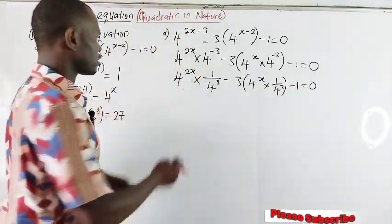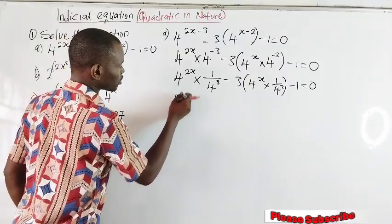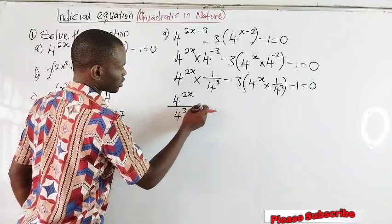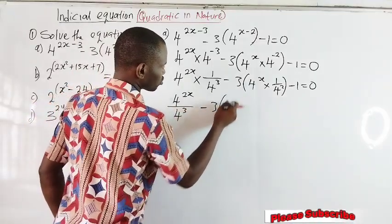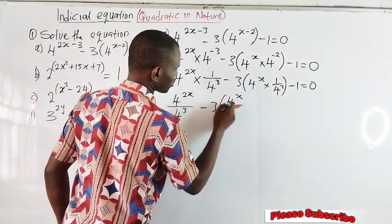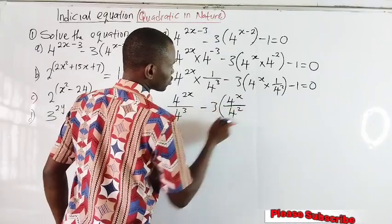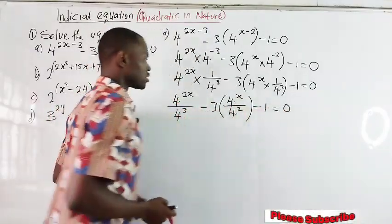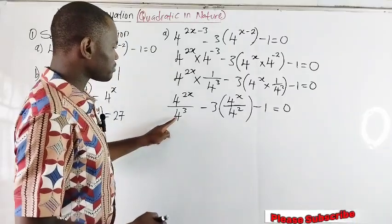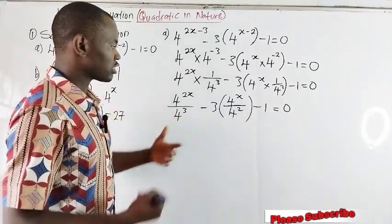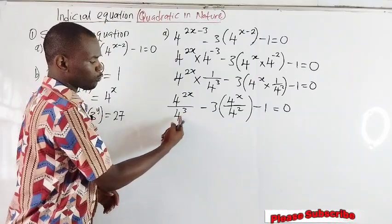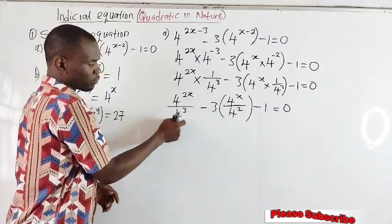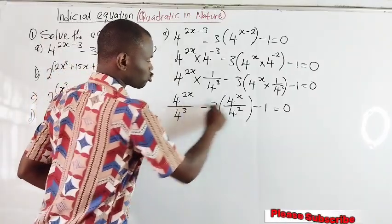At this point we multiply. We're going to have 4 raised to the power of 2x over 4 raised to the power of 3, minus 3 into 4 raised to the power of x over 4 power of 2, minus 1, equal to 0. My next focus will be to eliminate these denominators, and to do that I will use the highest power of 4. The highest power is 3, so I'll use 4 raised to the power of 3 to multiply all terms in the equation.